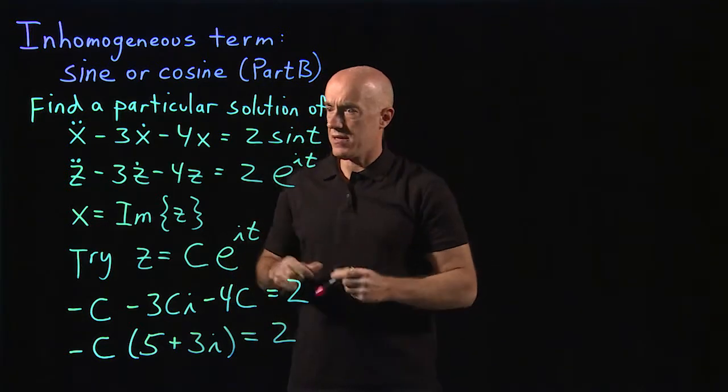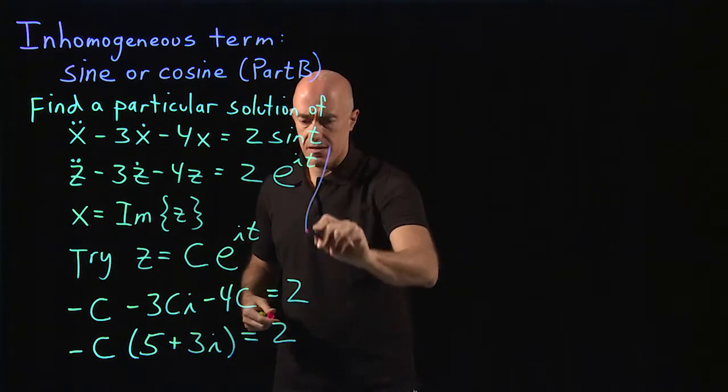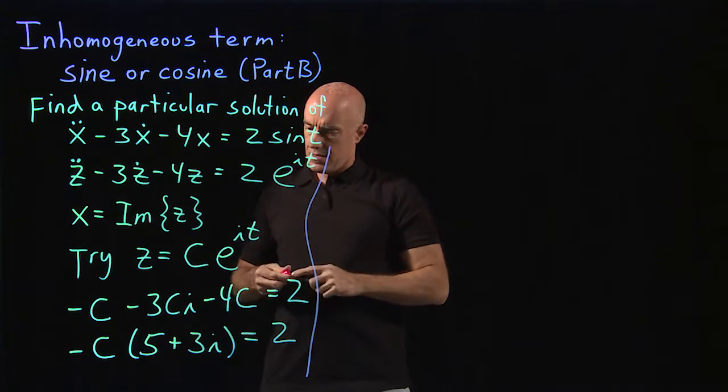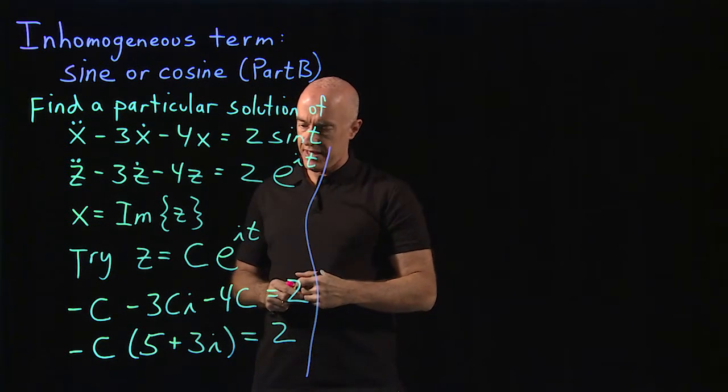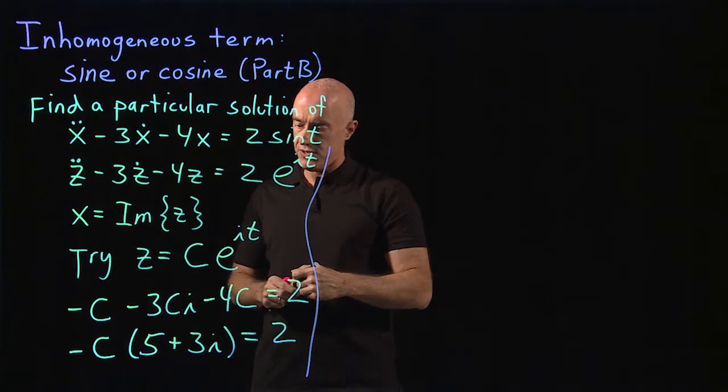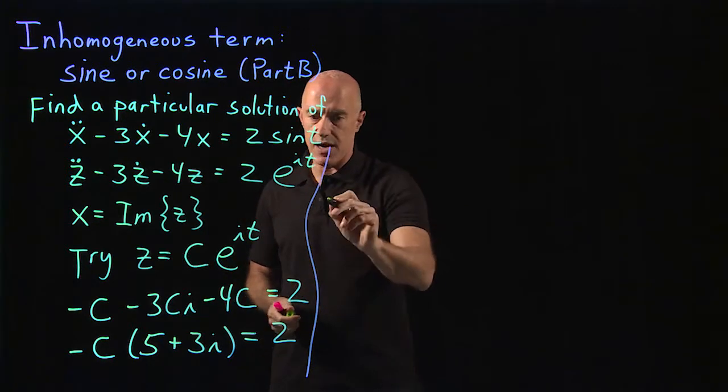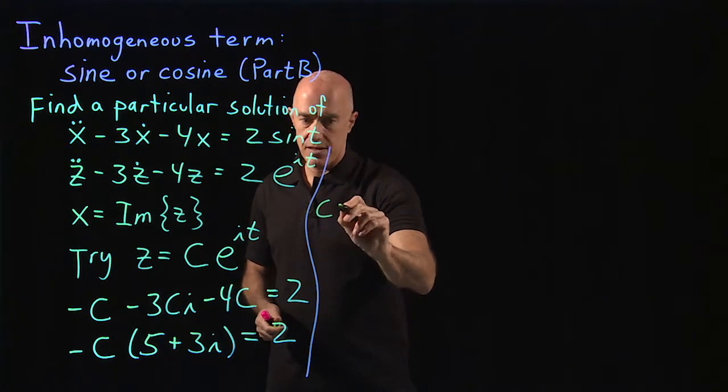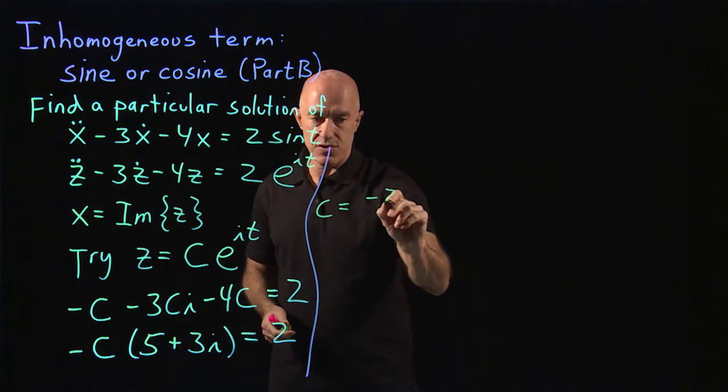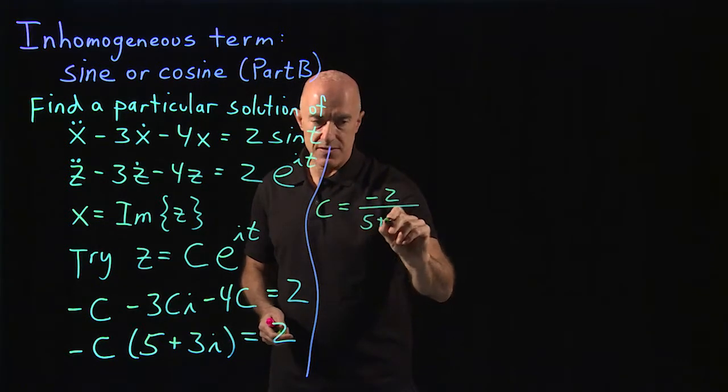So let me put that here. We solve that for c. So what do we get for c? So c is minus 2 over 5 plus 3i.